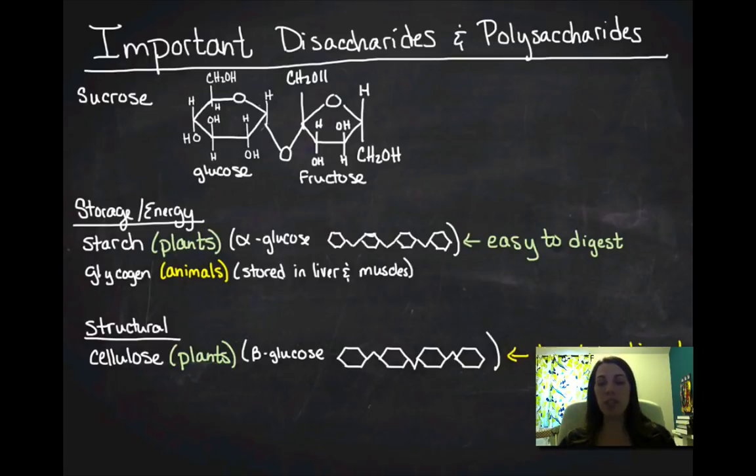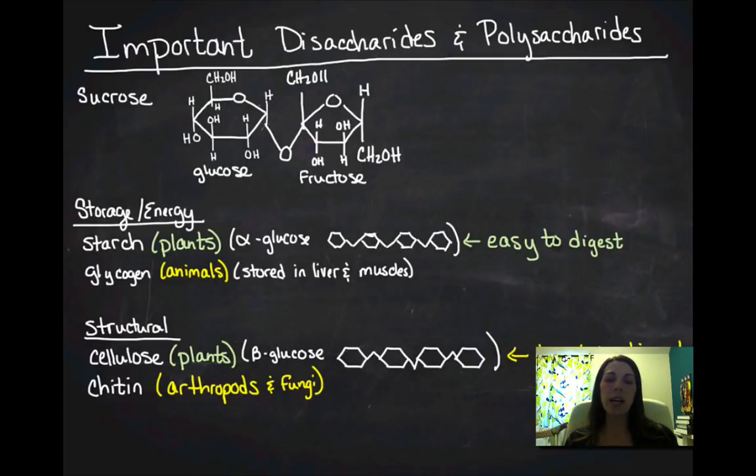We don't have any cellulase. Cellulase is pretty much found in bacteria. And then the other structural polysaccharide is chitin. And chitin is actually found in arthropods, insects and in fungi. In arthropods, it makes up the exoskeletons and in fungi, it makes up the cell walls of the fungi.